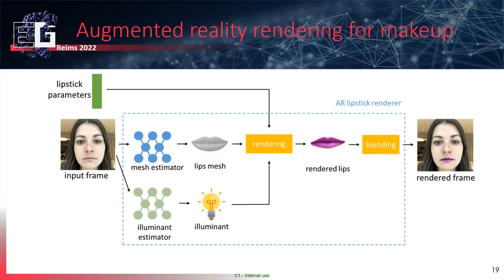In the context of virtual try-on for lipstick rendering, the system works as follows: given lipstick parameters and an input image of the person who wants to try the lipstick, a system estimates the mesh of the lips. This information is sent to the renderer together with illumination extracted from the image, and the lipstick parameters are rendered in the given context and blended back into the input image.